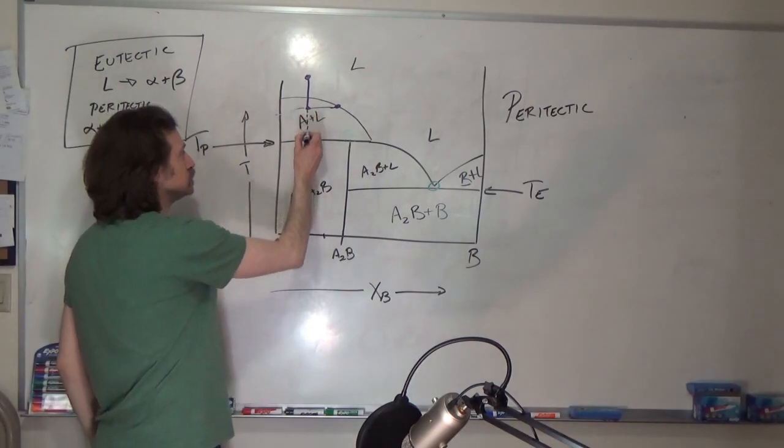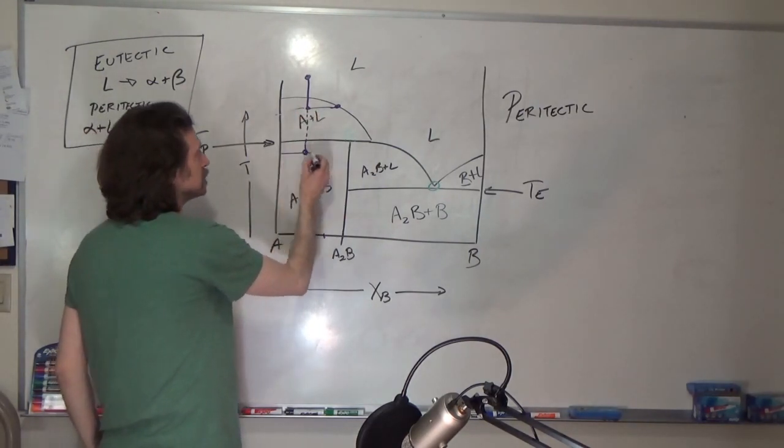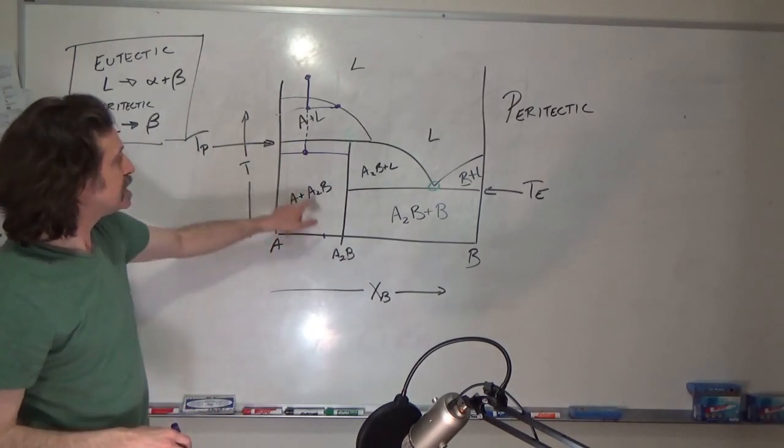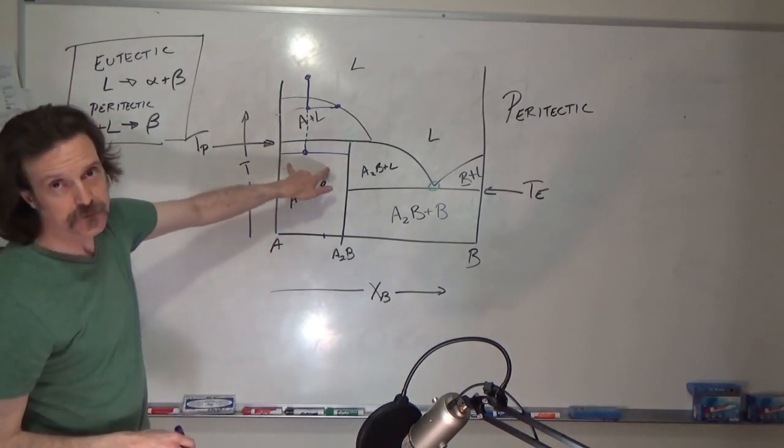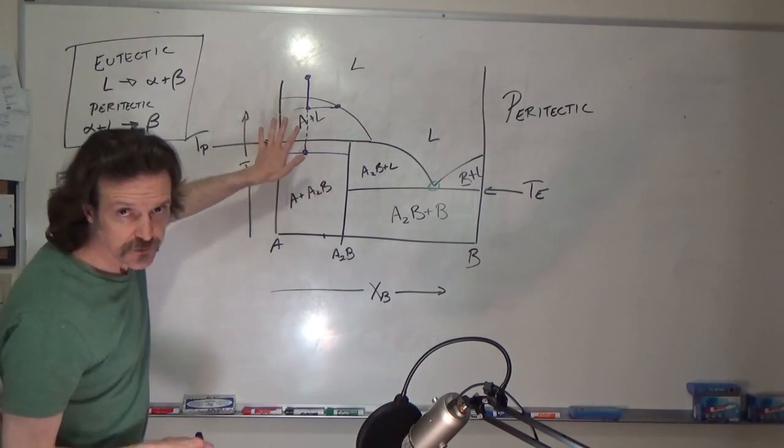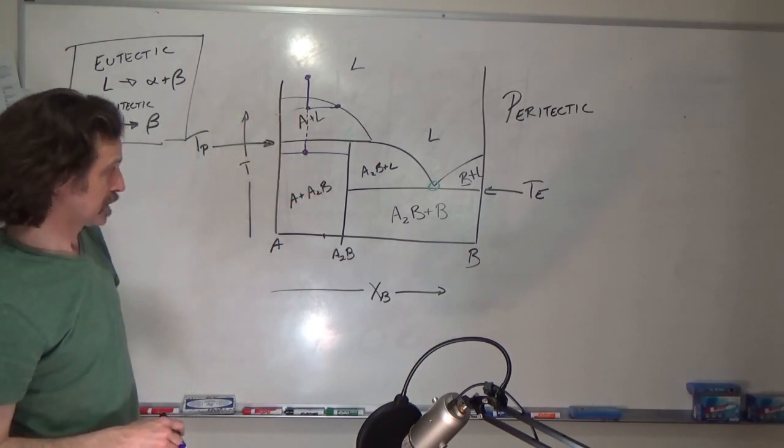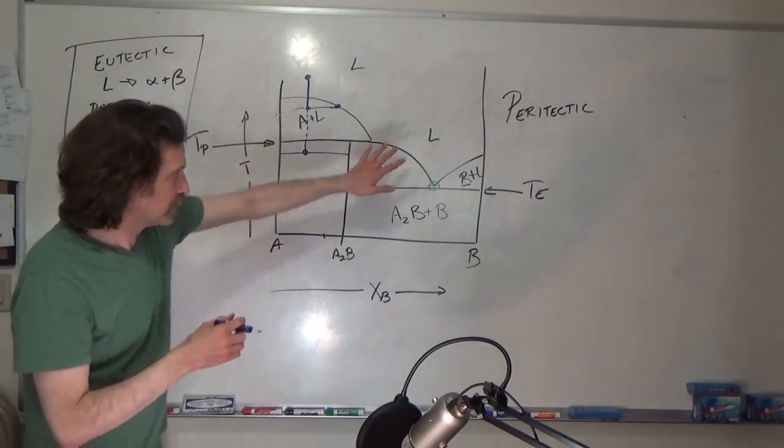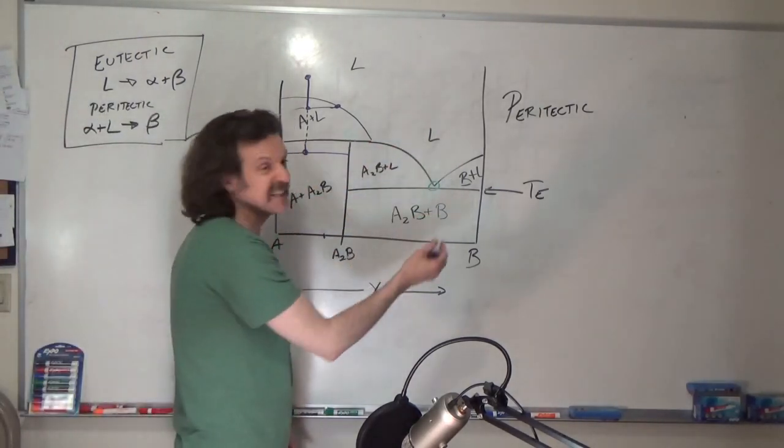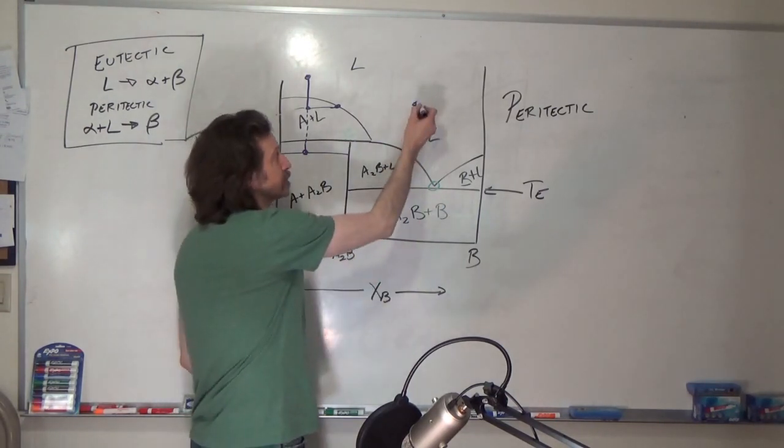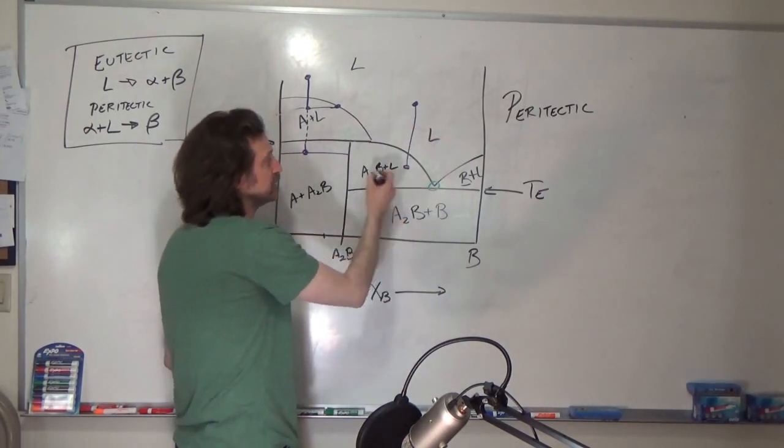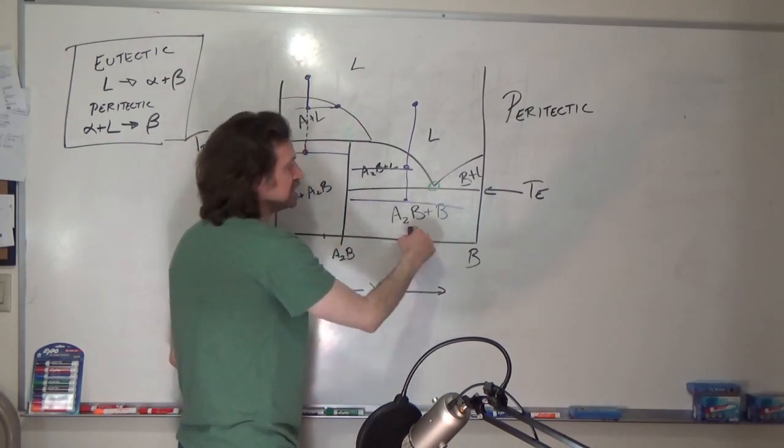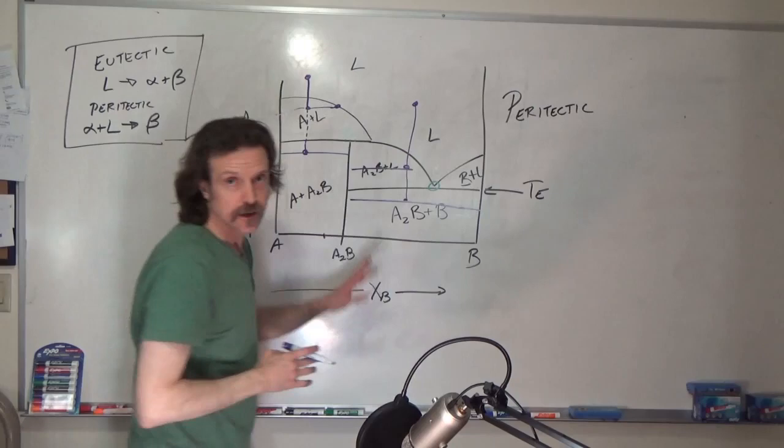Keep going down, in this region, I've got A, A to B, I can use the inverse lever rule. This is all exactly as we've seen before. The thing that is, and over on this side, I should point out, you have the same thing as well. You say you're here, cool down, A to B plus liquid, and here, A to B plus B. No surprise.